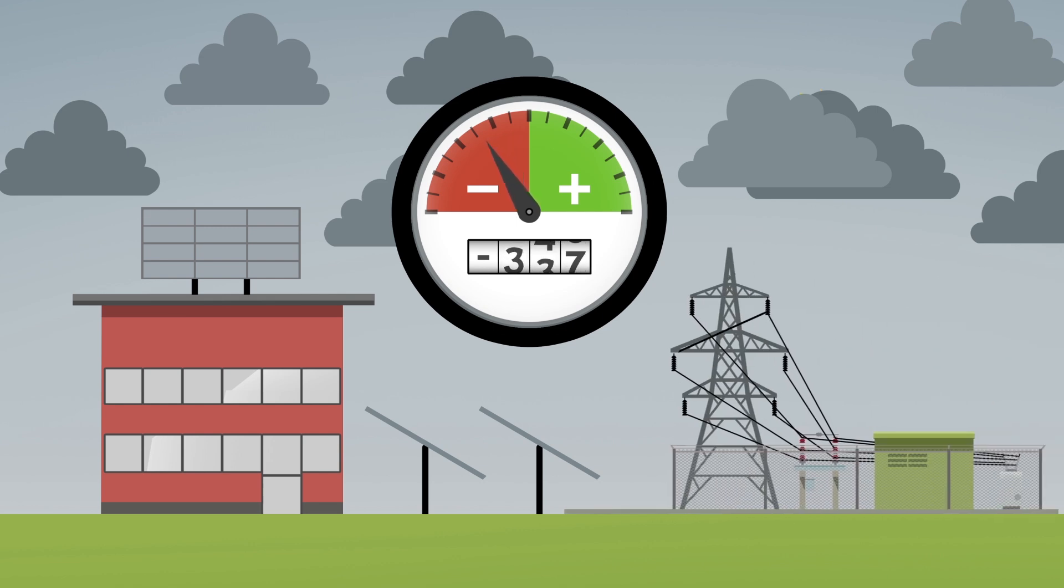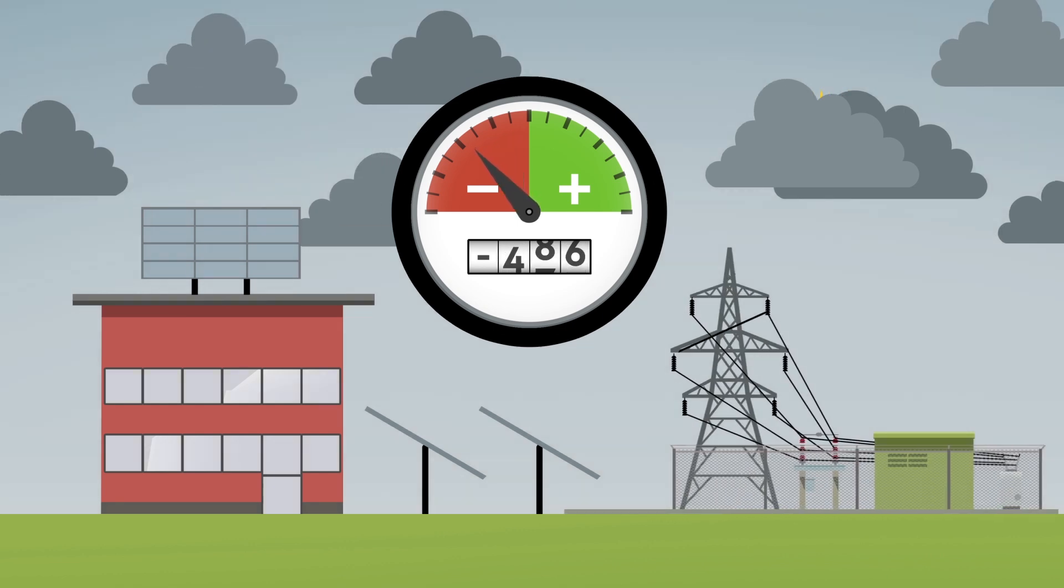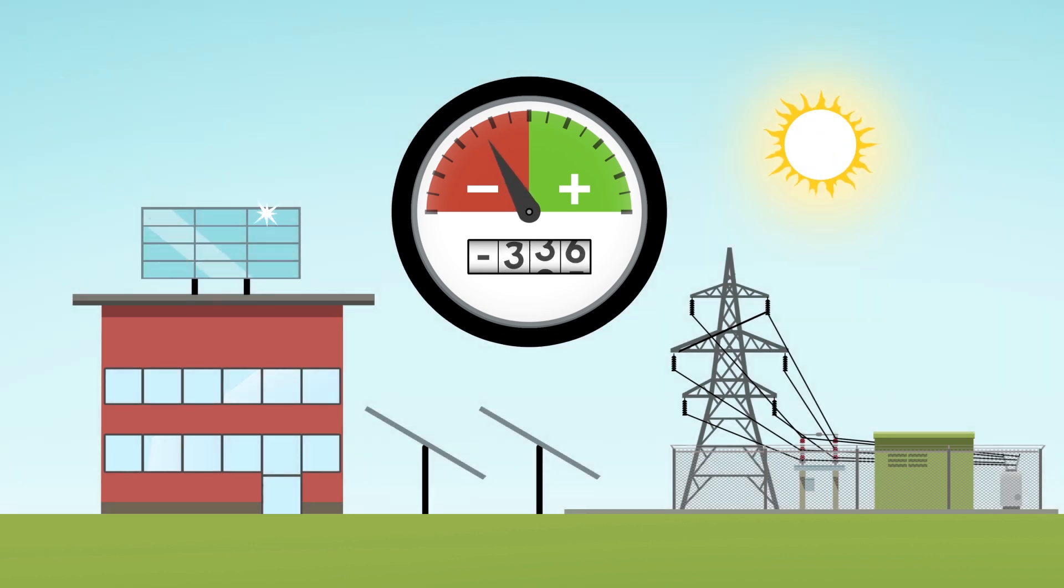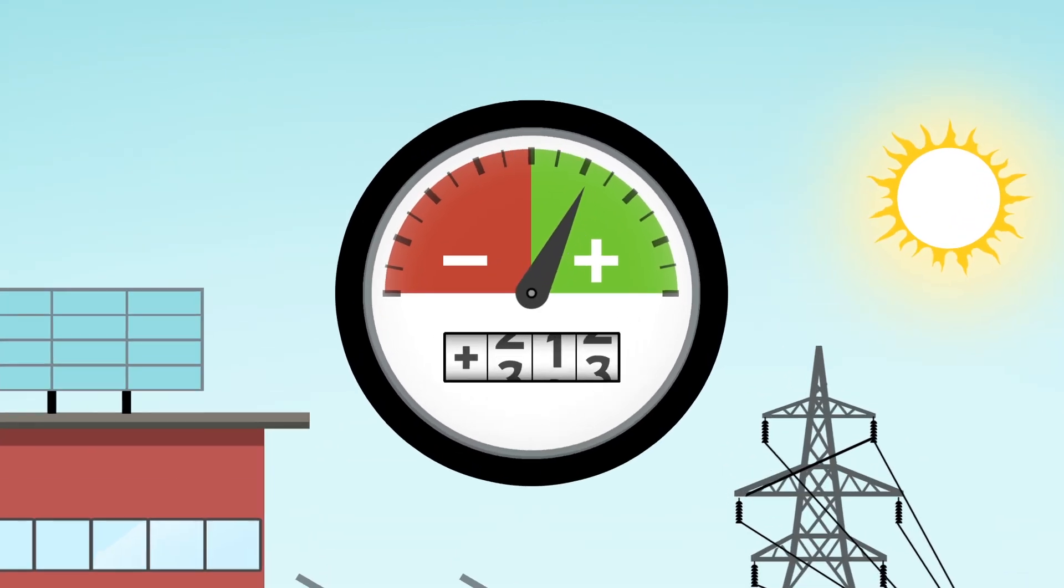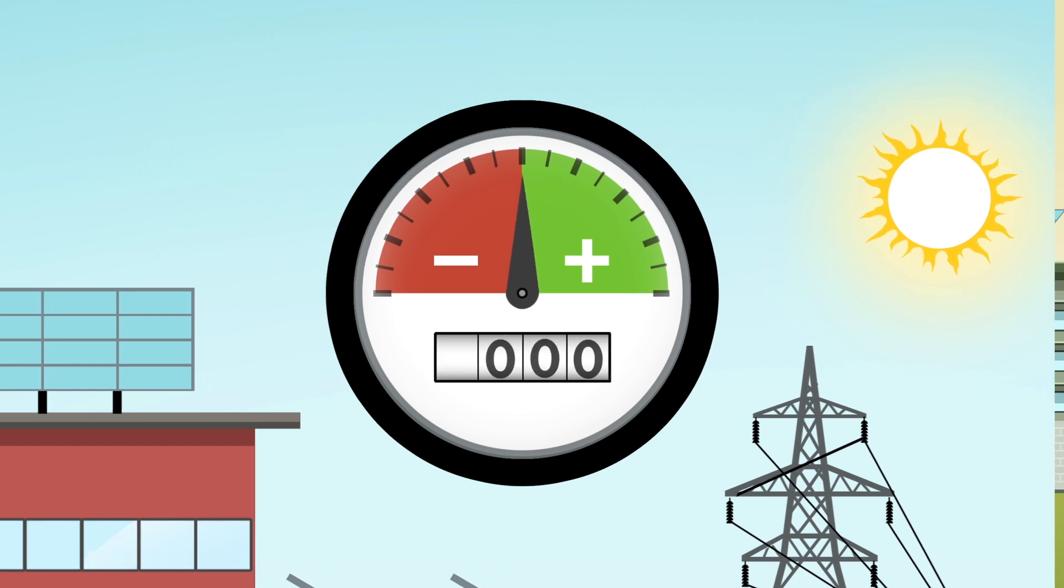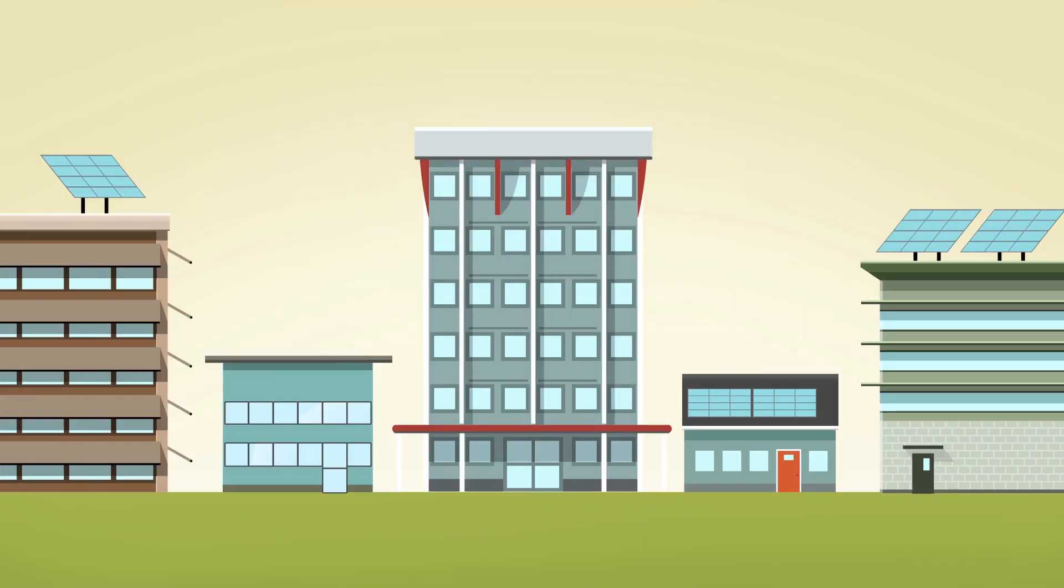When conditions improve, the on-site renewable energy systems will cover the building's energy need and send excess energy back into the grid to make up the balance. Over the course of a year, the building gives back as much energy as it takes. When zero energy concepts are applied to groups of buildings, the benefits are shared and multiplied.